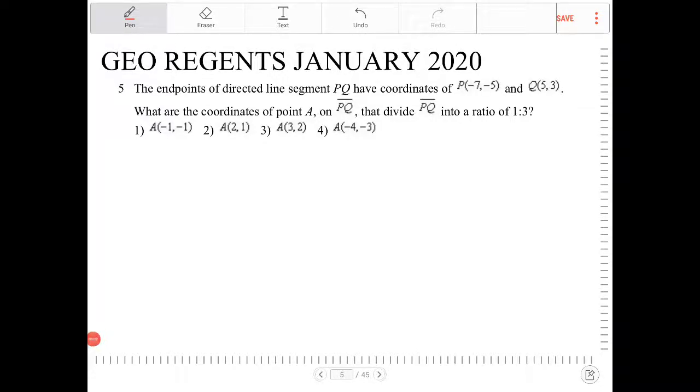The endpoints of directed line segment PQ have coordinates P, which is negative 7 comma negative 5, and Q, which is 5 comma 3. What are the coordinates of point A on line segment PQ that divide line segment PQ into a ratio of 1 to 3?